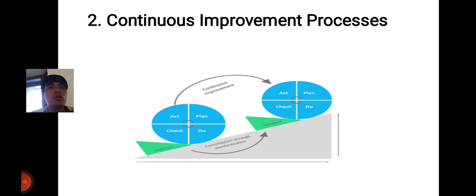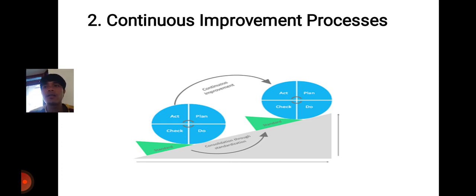Continuous Improvement Processes means regularly gathering feedback from customers about new products that we want to innovate, in order to improve the product.